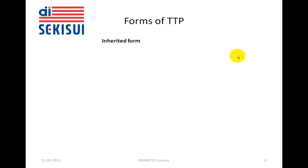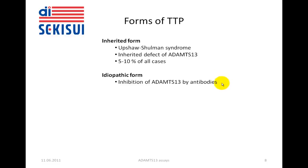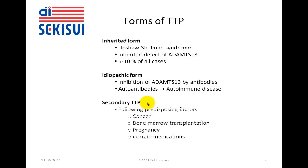What are the forms of TTP? There is an inherited form called Upshaw-Schulman syndrome, based on an inherited defect of ADAMTS-13. Several defects are known — either complete loss of the enzyme or dysfunctional mutants. The inherited form makes up about five to ten percent of all cases. Then there is a so-called idiopathic form of TTP, caused by the inhibition of ADAMTS-13 by antibodies. Since these antibodies react against the body's own molecule, this may be called an autoimmune disease. There are also secondary forms of TTP, where predisposing factors such as cancer, bone marrow transplantation, pregnancy, and certain medications are associated with increased risk. Secondary TTP cases make up about 40 percent of all cases.